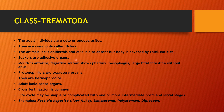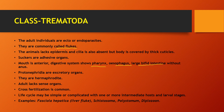Suckers are the adhesive organs. Their digestive system consists of a pharynx, esophagus, and large bifurcated intestine without an anus. Protonephridia is the excretory organ. Sense organs are reduced because we learned that in parasitic forms, sense organs are reduced. Cross-fertilization is common.